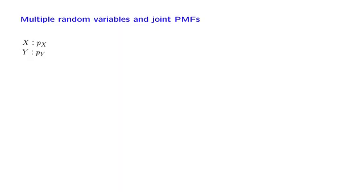Suppose that we have a probabilistic model, and on that model we have defined two random variables, X and Y, and that we have available their individual PMFs. These PMFs tell us about one random variable at a time — this one tells us about X, this one tells us about Y. But they do not give us any information about how the two random variables are related to each other.